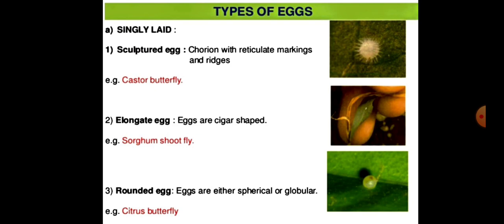The second type is the elongate egg — eggs are cigar-shaped. Example: sorghum shoot fly. The third type is the rounded egg — eggs are either spherical or globular. Example: citrus butterfly. Another type is the sculpted egg.